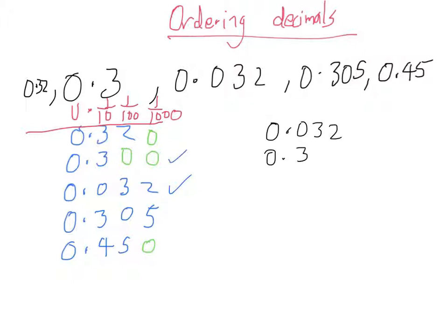Next smallest is 0.305, so 0.305. I've used that one.